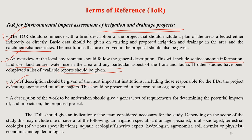A brief description should be given of the most important institutions in the proposed project location — including those responsible for the EIA, the project executing agency, and future managers — presented in the form of an organogram so that anyone can clearly understand who is involved and in what capacity. The description of work to be undertaken should give a general set of requirements for determining the potential impacts of certain activities. The TOR should also give an indication of the team considered necessary for the study.